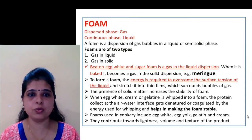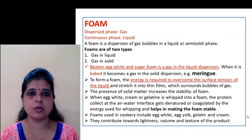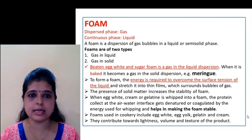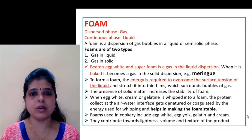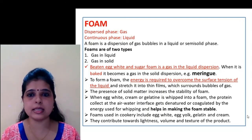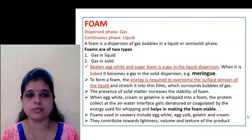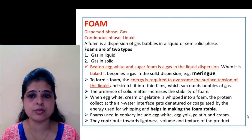Next is foam. In the foam colloidal system, the dispersed phase is gas and the continuous phase is liquid. A foam is a dispersion of gas bubbles in a liquid or semi-solid phase. It can be of two types: gas in liquid, and gas in solid. Beaten egg white and sugar foam is a gas-in-liquid dispersion. When it is baked, it becomes a gas-in-solid dispersion, for example meringue. To form a foam, energy is required to overcome the surface tension of the liquid and stretch it into a thin film which surrounds bubbles of gas, because the dispersed phase is gas.